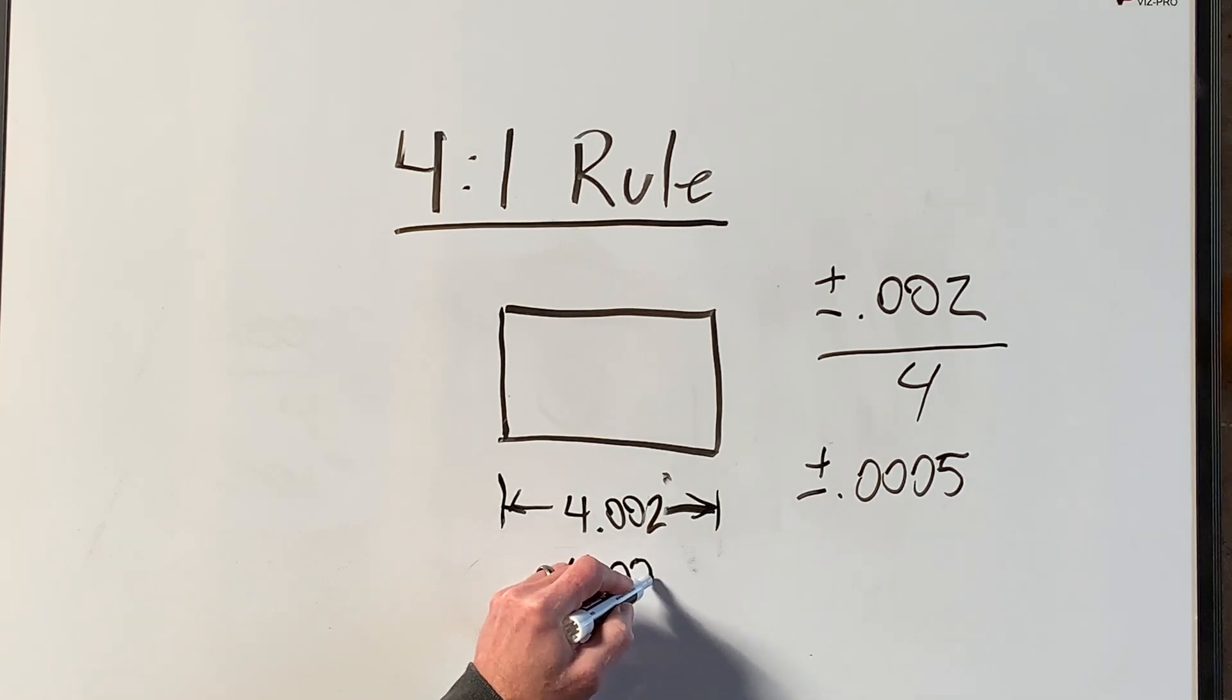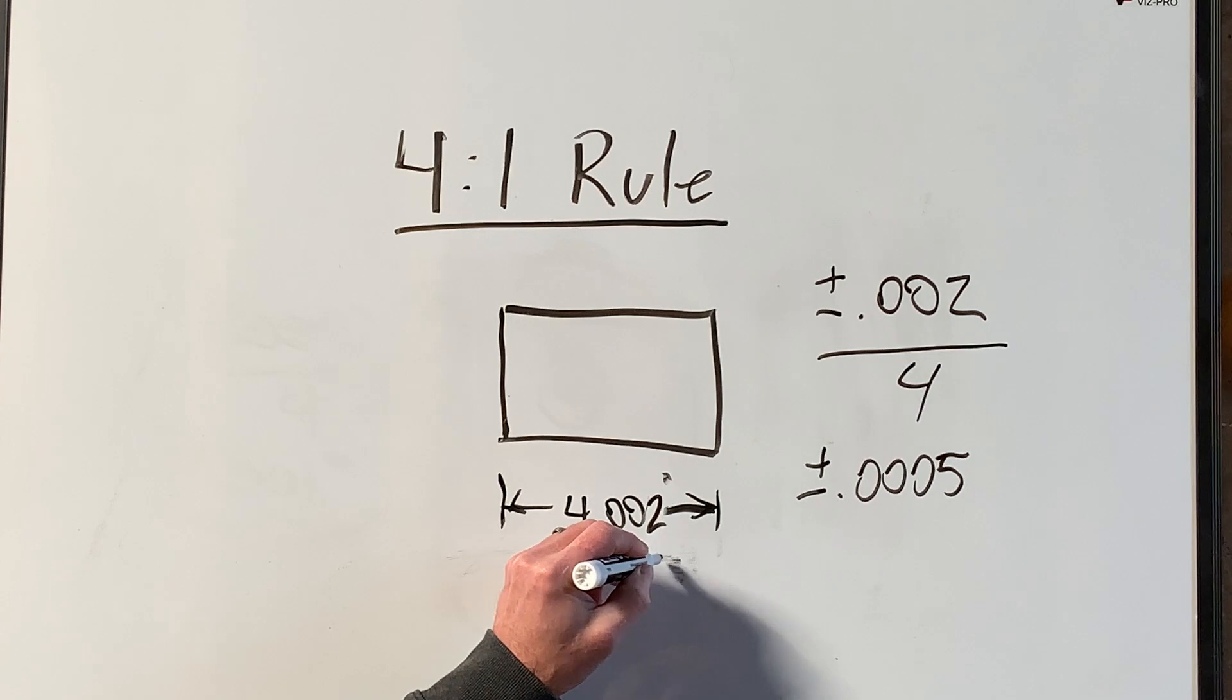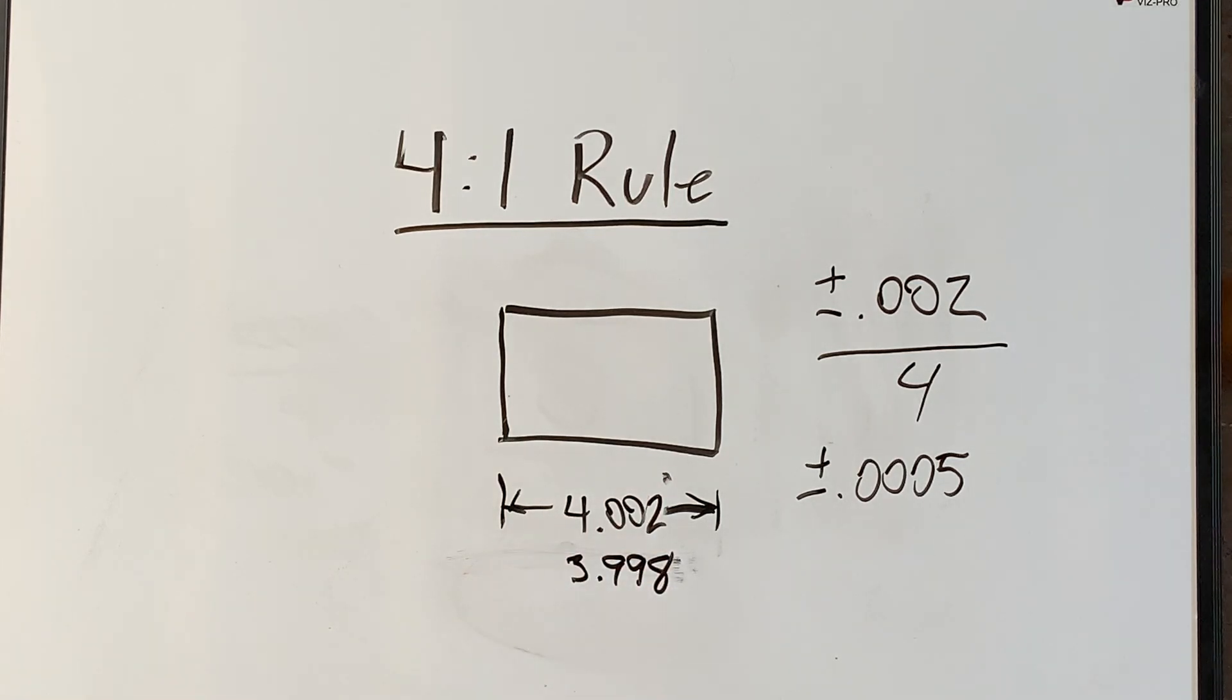...and a low of three inches, nine hundred and ninety-eight thousandths. So that gives you the same kind of tolerance, it's just written in a different way.